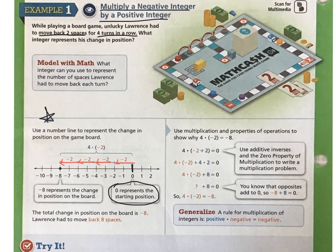Moving backwards would be a negative number. And he has to do this four times in a row. So, four groups of negative 2, or repeatedly adding negative 2 together four times, is going to give us a product of negative 8. So negative 8 represents the change in position on the board. Or, unlucky Lawrence had to move back a total of 8 spaces.